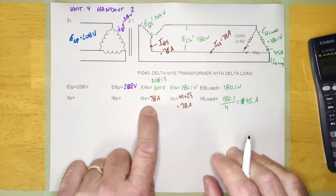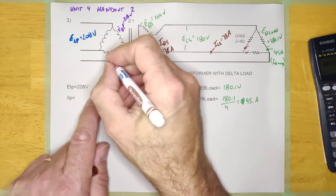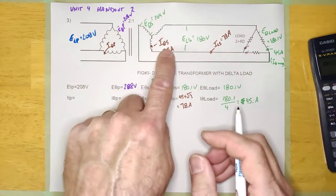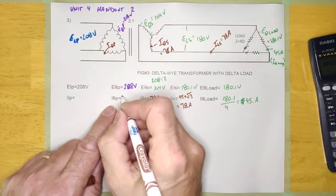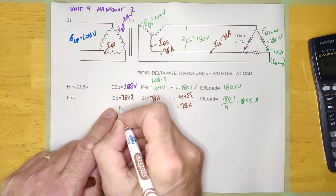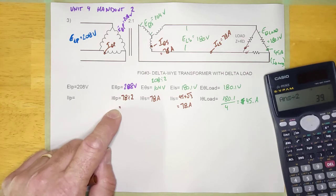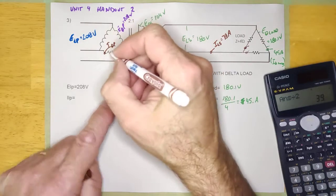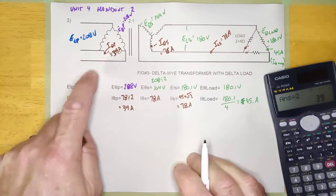I-phase primary — that would be the current here on the primary side of the transformer. It's going to go across the transformer from phase to phase at a ratio of 2 to 1. So this will be 78 divided by 2, which equals 39 amps. And that would be right here.